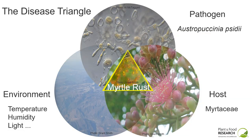Pathologists approach studying pathogens with the concept of the disease triangle. For disease to occur you need a pathogen present, a susceptible host, and an environment conducive to the pathogen being able to infect the host. In particular with myrtle rust, humidity is quite important during the spore germination process, and without relatively high humidity, even with the pathogen present, you won't get infection.